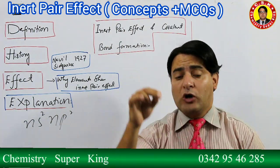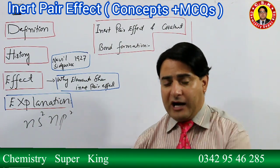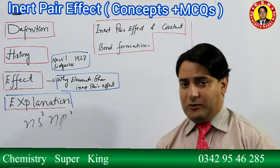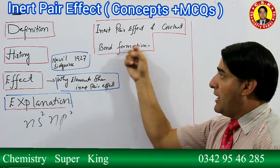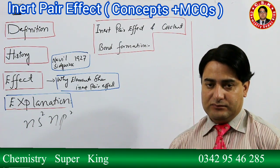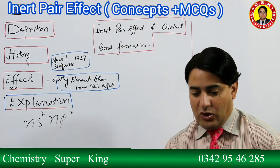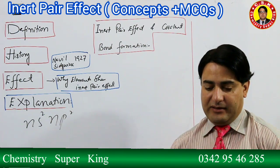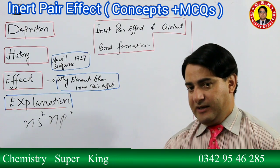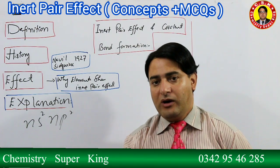When the Inert Pair Effect occurs in Group 4 elements, they show a +2 oxidation state. Only the p-electrons participate in bonding and the element shows +2 oxidation state, and the bond formed is ionic. If the Inert Pair Effect does not occur in a Group 4 element, all four electrons - both s and p - participate in bonding.